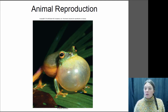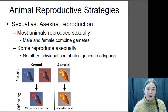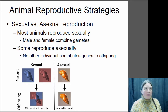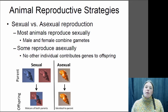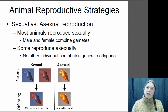We're going to start with talking about the different types of reproductive strategies that animals might have. One thing that animals can do is they can either reproduce sexually or they can reproduce asexually. Now most animals reproduce sexually all the time.